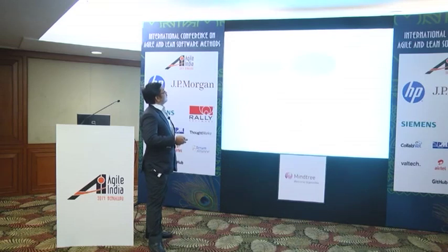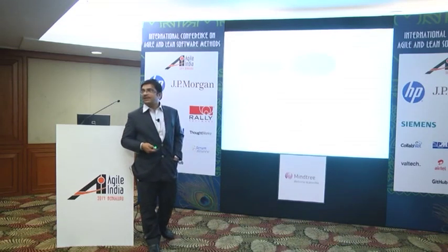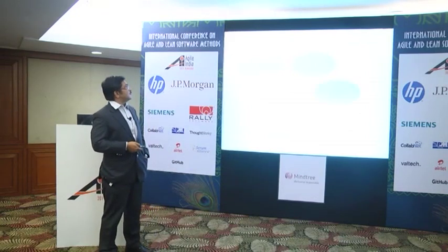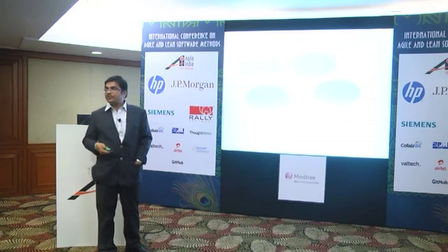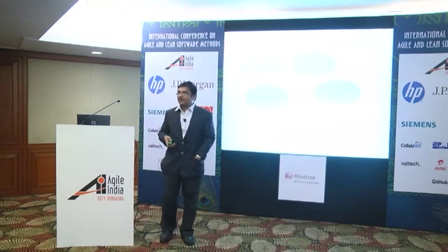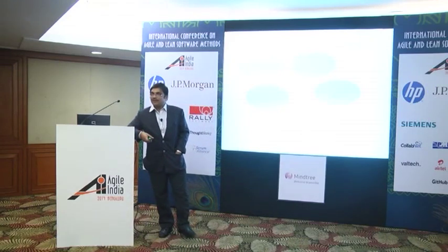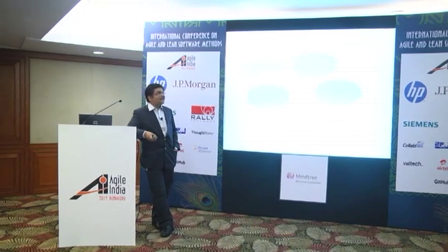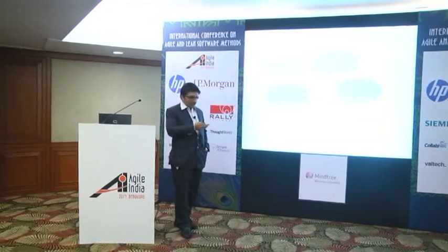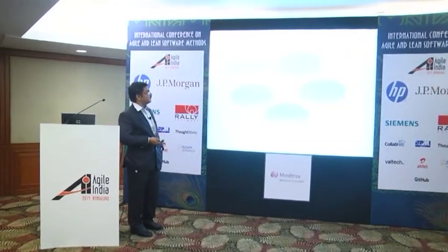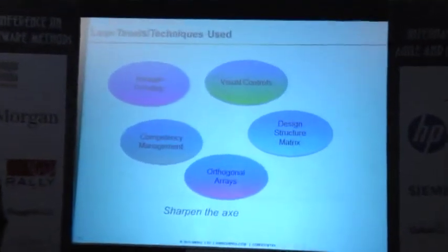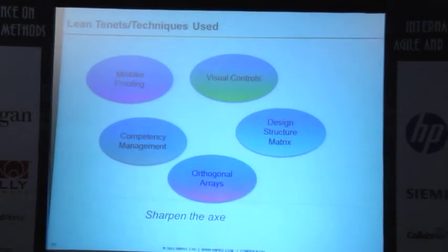Moving on, I will talk about mistake proofing — detecting and preventing defects at the source — visual controls, design structure matrix, and competency management: how we allot work according to competency, develop that competency, and take a structured approach seeing how it works in tandem with mistake proofing and visual controls. And orthogonal arrays from both an optimization and design perspective.